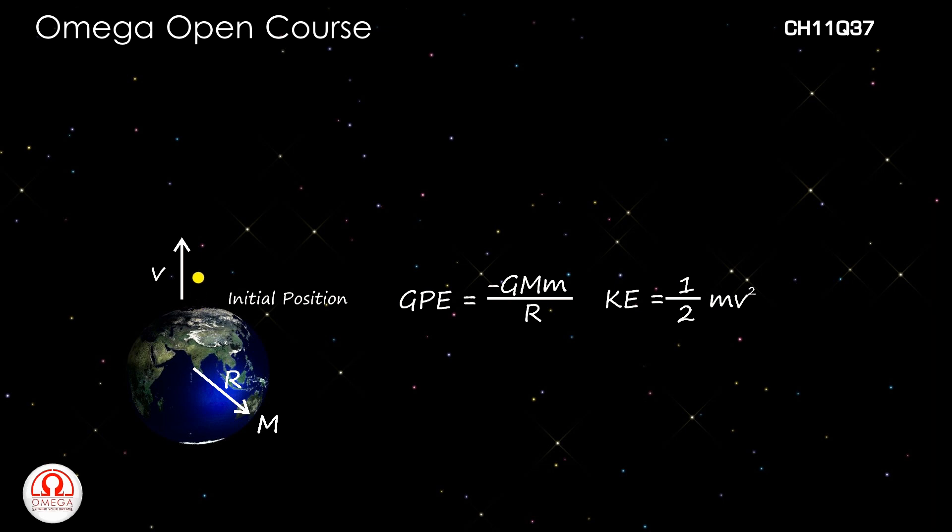As the particle moves up, its speed will decrease due to the gravitational pull of the earth. This will decrease its kinetic energy, but as the distance of the particle increases, the gravitational potential energy of the system will increase.